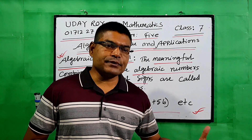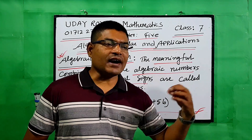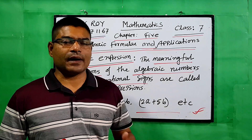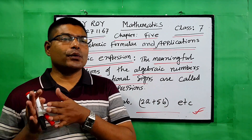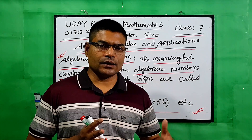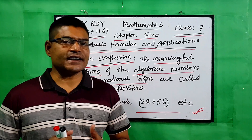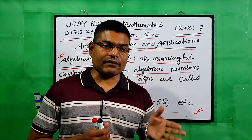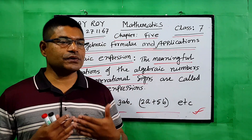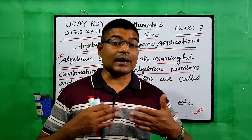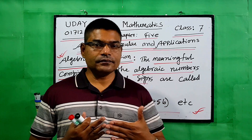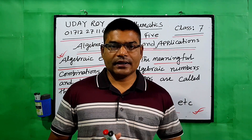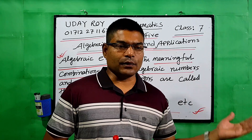Now we will do some math — find the square, find the value, show that, and prove that. Before starting the math, you have to follow the book formulas carefully and use some corollaries. Then your math will be very easy.